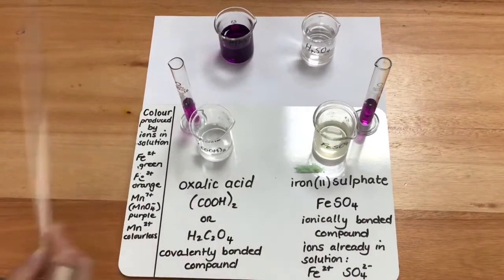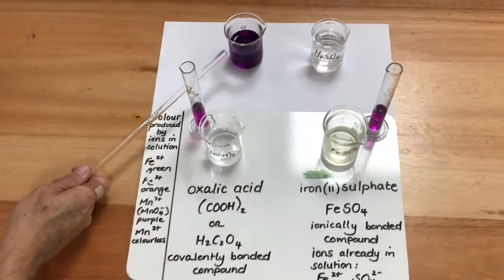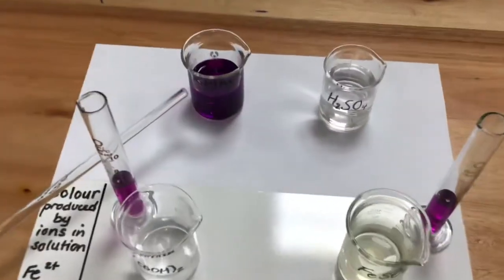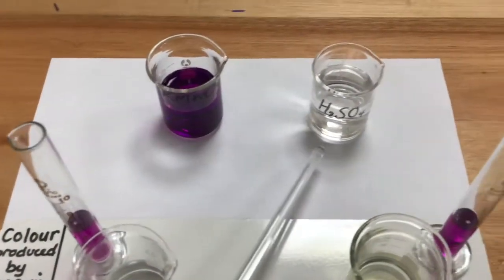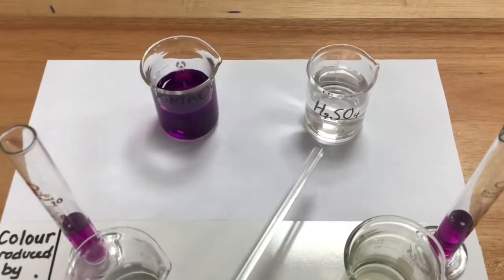This purple solution that I have here is potassium permanganate, KMnO₄, and then I have some dilute sulfuric acid at the back here.